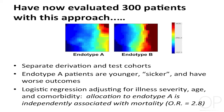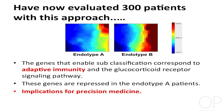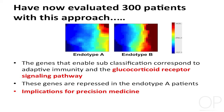This is what the pediatric endotypes look like based on 100 genes and that digital platform. Without knowing anything about bioinformatics or gene expression, you can see that endotype A patients on the right look very different from endotype B patients. Endotype A patients tend to be younger, sicker, and have worse outcomes. The genes that define these endotypes represent adaptive immunity and the glucocorticoid receptor signaling pathway — and those genes are repressed in endotype A patients.